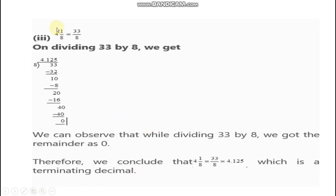Moving to the next part, third part: 4 and 1 upon 8. First, you can convert it to a proper fraction. 4 times 8 is 32, plus 1 gives us 33 upon 8. The same procedure will be followed — you divide. When we divide 33 by 8, the remainder becomes 0, so the decimal expansion is terminating. Therefore, 4 and 1 upon 8, which is 33 upon 8, equals 4.125, which is a terminating decimal.